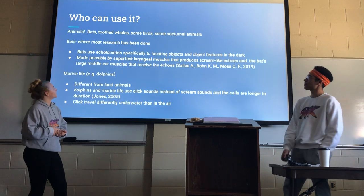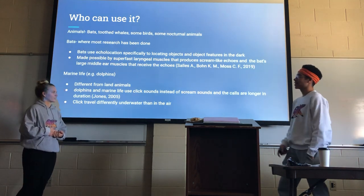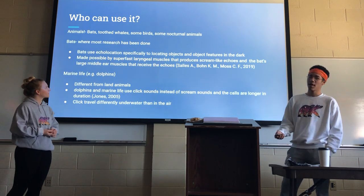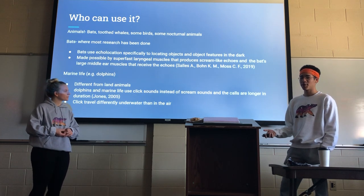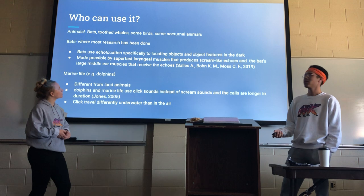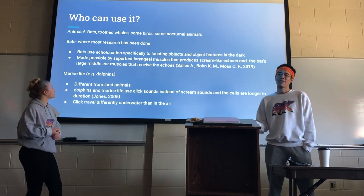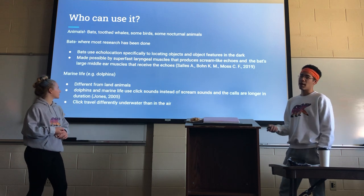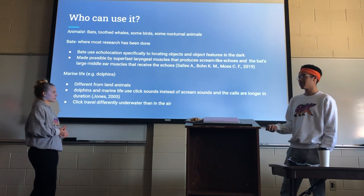Speaking of animals, these are the animals that can use echolocation: bats, dolphins, and many other animals. Bats use echolocation specifically to locate objects and object features in the dark, because they typically live in caves where it is very dark. Echolocation in bats is made possible by specialized muscles that produce scream-like noises, and bats receive these echoes with large middle ear muscles. In dolphins, rather than using scream-like noises, they use clicks, and these clicks travel differently underwater than in air.